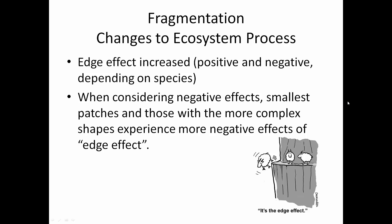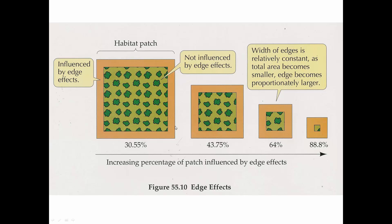Back to the edge effect — it can be increased, either positive or negative. When considered negative, the smallest patches and those with more complex shapes experience the most negative effects. A diagram shows that with a 10% edge taken from the whole block of habitat, less and less of the habitat is preserved as patches get smaller. So smaller habitats could be more negatively affected by edge.